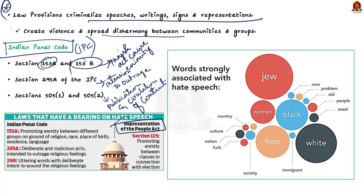Both Sections 123(3A) and 125 of the Representation of People's Act bar the promotion of animosity on the grounds of race, religion, community, caste, or language in reference to elections, and these are included under corrupt electoral practices. These are the safeguards provided against hate speech in the IPC and the Representation of People's Act.